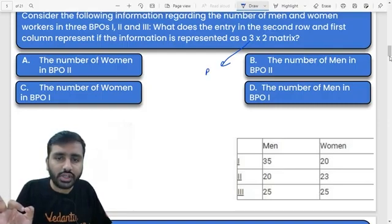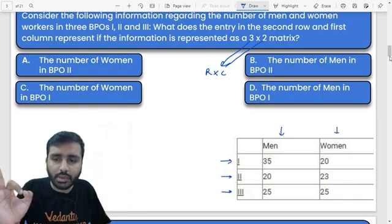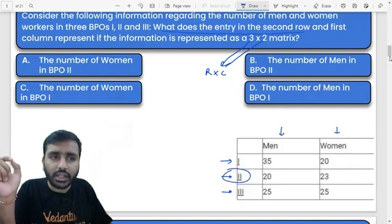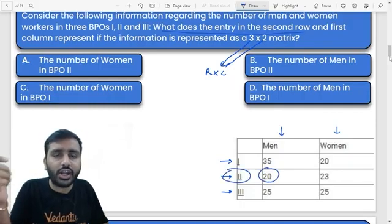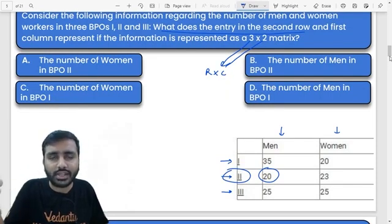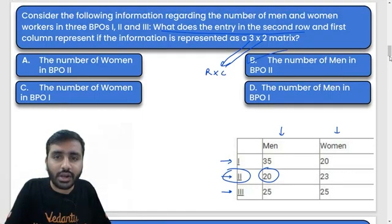So we have row number 1, row number 2, row number 3, and column number 1, column number 2. The question asks: what does the entry in the second row and the first column represent? Second row and first column represents the number of men in BPO 2. The correct option is option B.